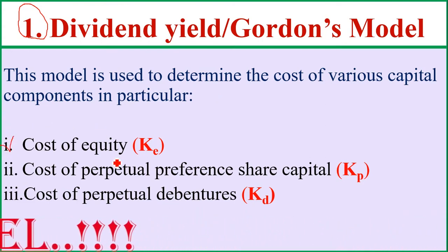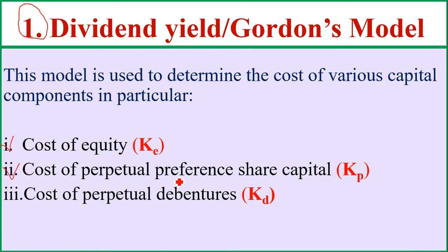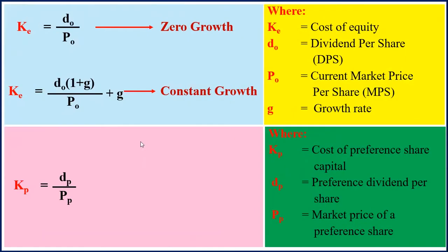This model is used to determine the cost of various capital components: in particular, the cost of equity (Ke), the cost of perpetual preferential capital (Kp), and the cost of debentures (Kd). The cost of equity is also the cost on ordinary shares — what it costs the company with respect to those ordinary shares.